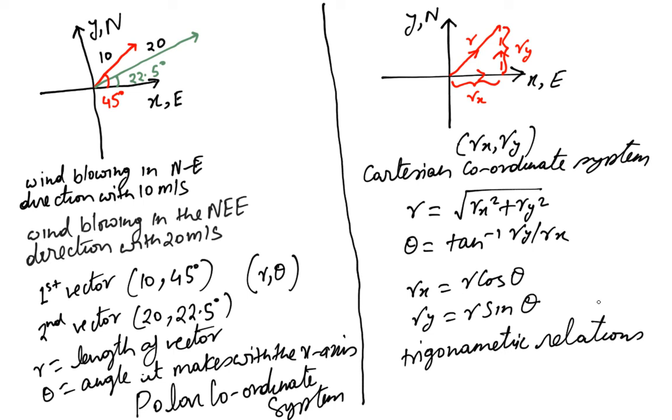We covered two coordinate systems, the polar coordinate system and the Cartesian Coordinate System, which is being used to express a vector. In the next class, we'll talk about adding vectors. We already have talked about adding scalars, but we'll talk about adding vectors in the next class.